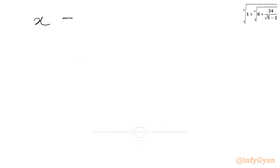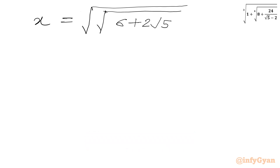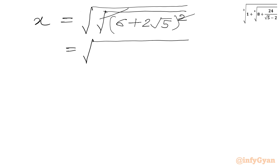So I can write x equal to the fourth root, which is the square root of the square root of 6 plus 2 root 5 whole squared. The inner square root and square cancel out, so we can write x equal to the square root of 6 plus 2 square root 5.